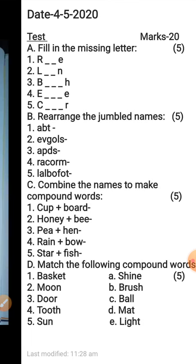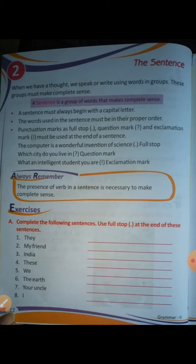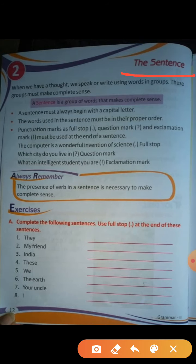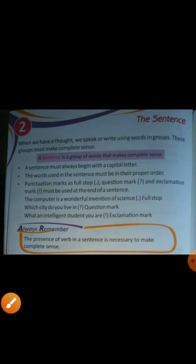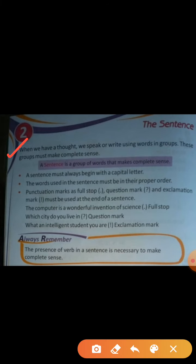After the test, open page number 12. Your new chapter is 'The Sentences' — it is your second chapter. Now come on to the explanation. Your first line is: when we have a thought, we speak or write using words in groups. These groups must make complete sense. So, in short, a sentence is a group of words that makes complete sense.